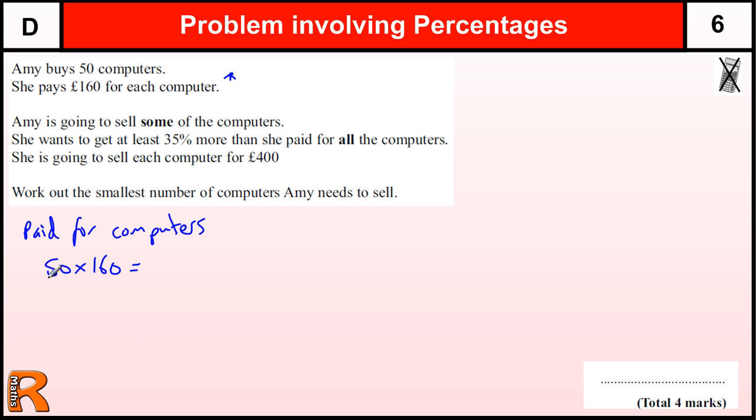Now we could do that calculation straight away, or we could try to be a little bit more sophisticated and think about doing an easier calculation by doubling the 50 and halving the 160 to make an easier calculation that has the same answer. I could do this, but because five sixteens are 80 and two zeros on the end, you get the same answer, £8,000.